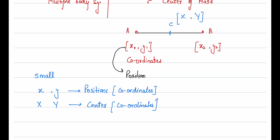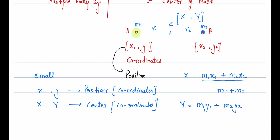Now let's look at the formula. For a two-body system with masses m1 and m2, at distances r1 and r2, to find the center of mass coordinates: capital X equals (m1·x1 + m2·x2) divided by (m1 + m2), and capital Y equals (m1·y1 + m2·y2) divided by (m1 + m2).